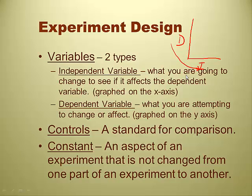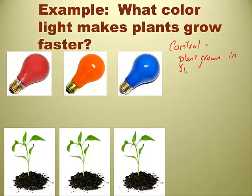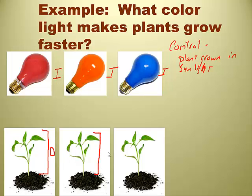Let's say we want to find out what color light affects plant growth. The control in this case would probably be a plant grown in sunlight. The independent variable would be the different color lights we're using — say a red light, an orange light, and a blue light — because the independent variable is what we can change. The dependent variable would probably be how tall the plants actually grew, because the dependent variable represents your results — it's the thing you're trying to see if it depends on the independent variable.